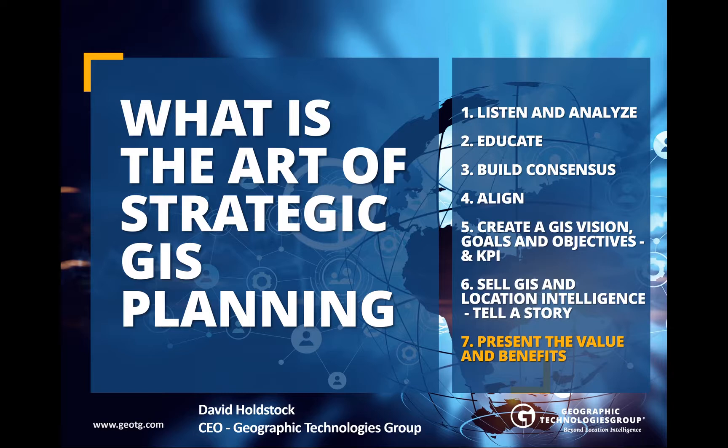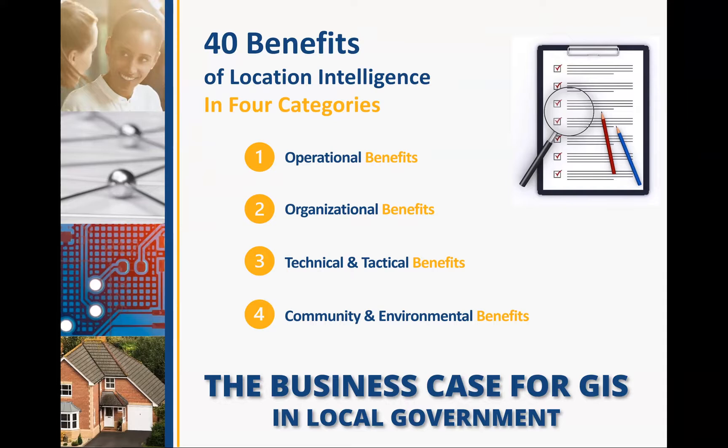But if you strip away all that noise, you get to one thing — number seven: present the value and the benefits. It's taken 20 years for our team to put these things together. I've worked hard on putting these types of benefits together just so you have a game plan. We have a list of the operational benefits, the organisational, technical, tactical, and community and environmental benefits.